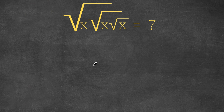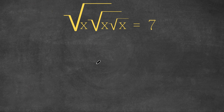Hey guys, welcome back to Qlik Academics. In today's video, I'm going to be teaching you guys how to solve this algebraic problem. We have the square root of x times the square root of x times the square root of x, and this is equal to 7.